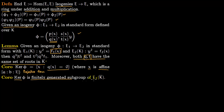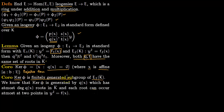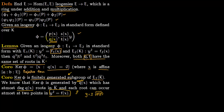Once we know the kernel is given by the roots of this denominator, we can say it is a finitely generated subgroup of E1(K-bar). This corollary follows simply because Q, being a polynomial, has at most deg(Q) roots in K-bar. Plugging each root into the elliptic curve equation gives at most two points, so the kernel has at most twice the number of roots — a finite number — making the kernel a finitely generated subgroup.